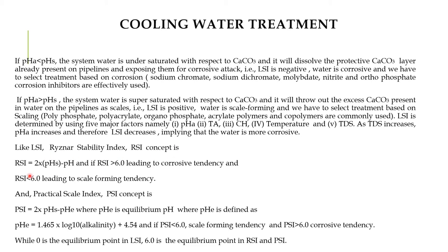The RSI concept: RSI = 2 × pHs − pH. If RSI is greater than 6, it leads to corrosive tendency; if RSI is less than 6, it leads to scale-forming tendency. The Practical Scale Index: PSI = 2 × pHs − pHc, where pHc = 1.46 × log10(alkalinity) + 4.54. If PSI is less than 6, scale-forming tendency; if PSI is greater than 6, corrosive tendency. Zero is the equilibrium point for LSI, and 6 is the equilibrium point for RSI and PSI.